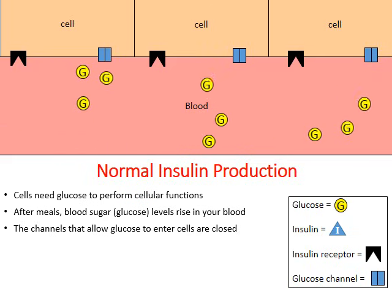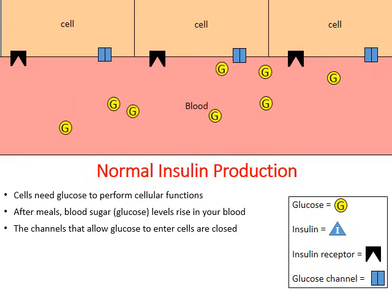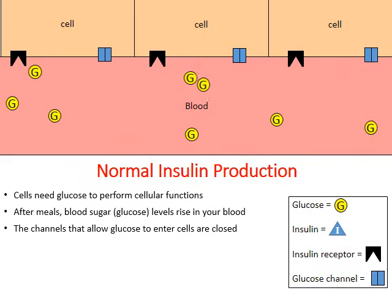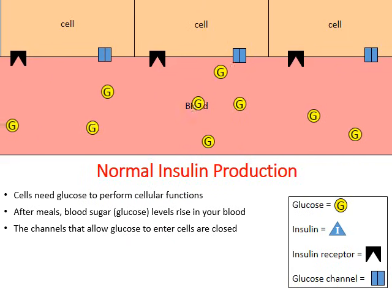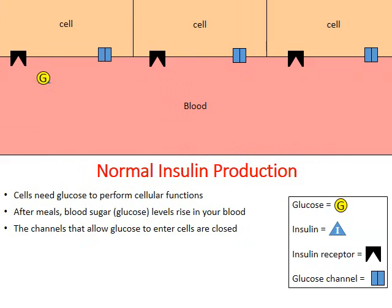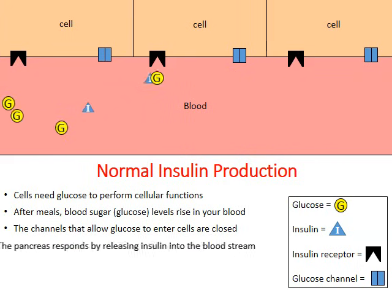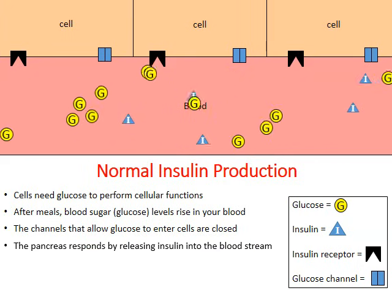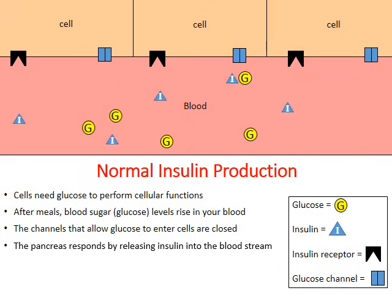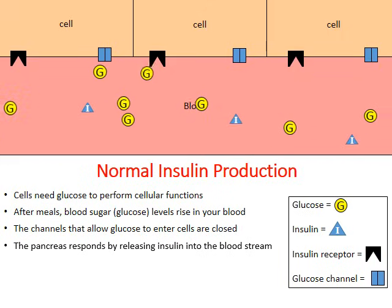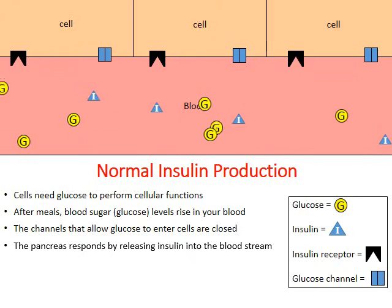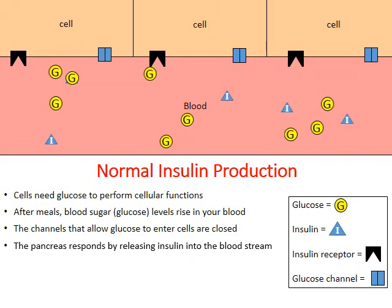If you notice, some of the glucose are trying to gain entrance into the cells, but they keep getting blocked by those closed blue doorways — those glucose channels are closed. So the pancreas will respond to high blood sugar by releasing insulin, and what insulin is going to do is cause those blue glucose channels to open.